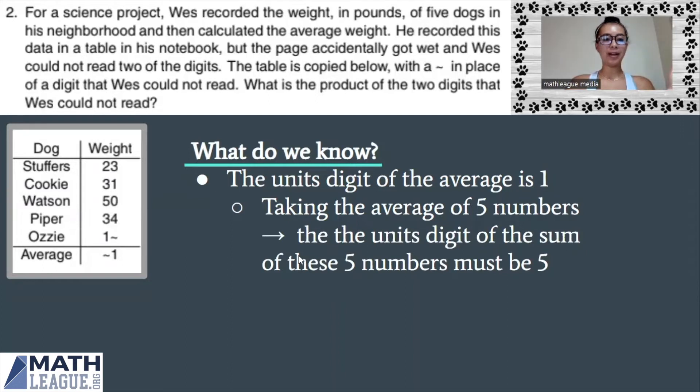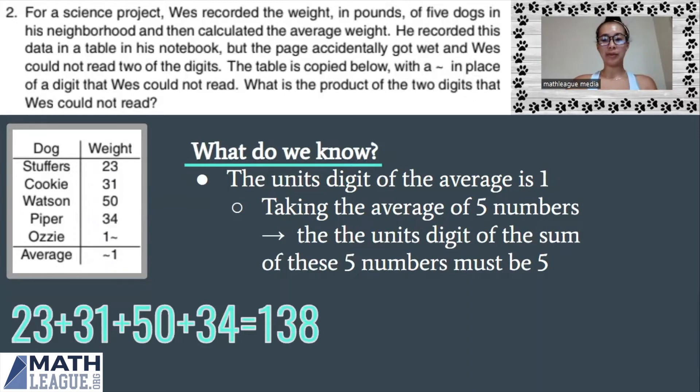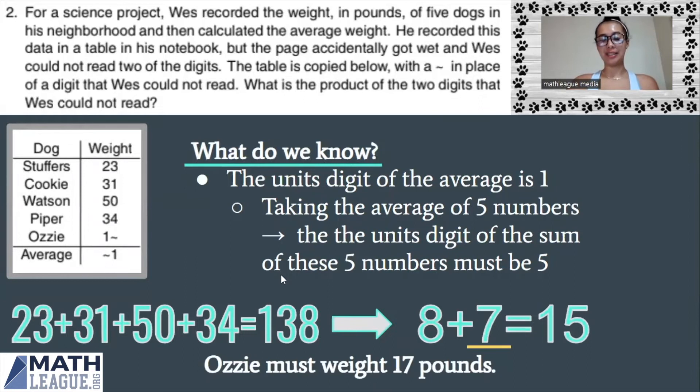If we add all the dogs that we do know, if we add Stuffers, Cookie, Watson, and Piper together, their combined weight is 138 pounds. So when we add Ozzie's weight to 138, we need a number that ends in five. Well, we know that eight plus seven is 15. That's going to end in five. So it makes sense that Ozzie must weigh 17 pounds.